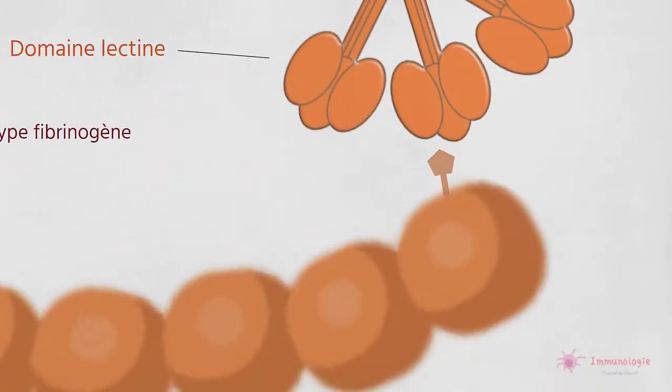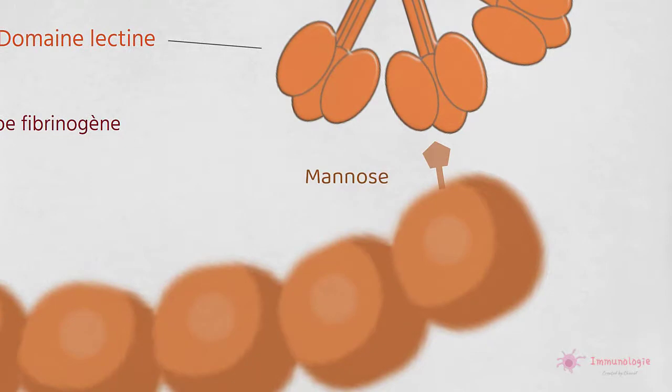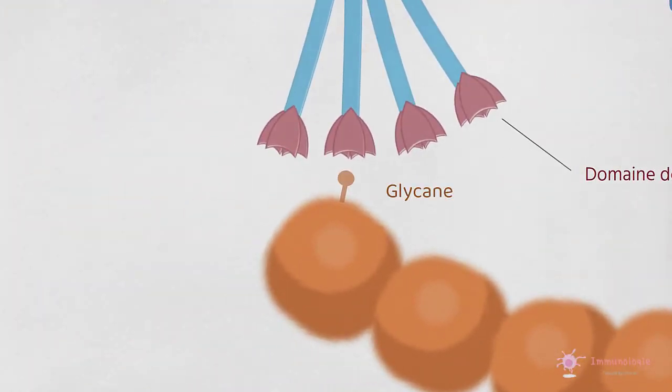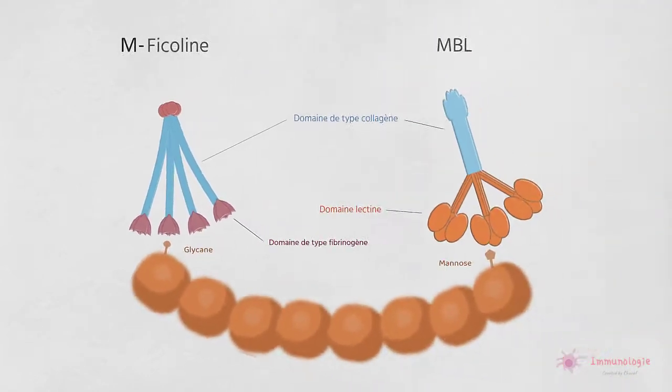La MBL se lie aux résidus de mannose sur les polysaccharides et le domaine de type fibrinogène de la ficoline se lie au glycane. Ces polysaccharides sont abondants dans les bactéries et les champignons.